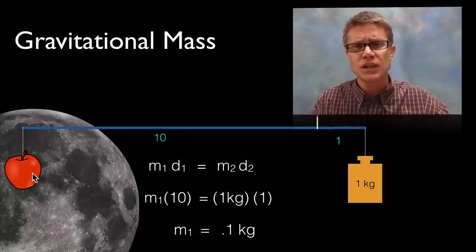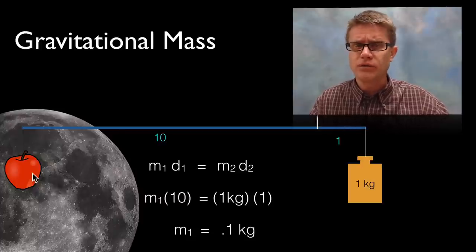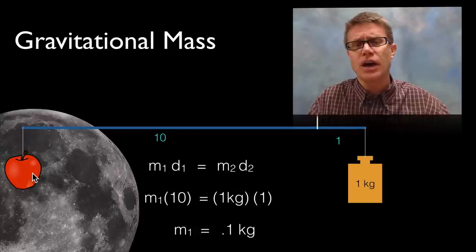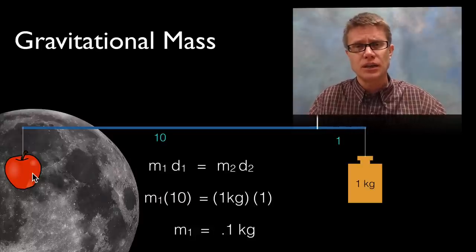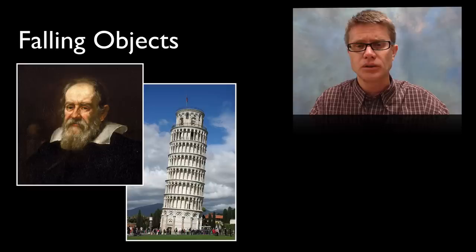Now you might be confused. If we were using a scale, for example, and talking about weight, we would find the weight is going to change. But gravitational mass is really a measure of how much material is in the object, and therefore how much that gravitational field is pulling on it.